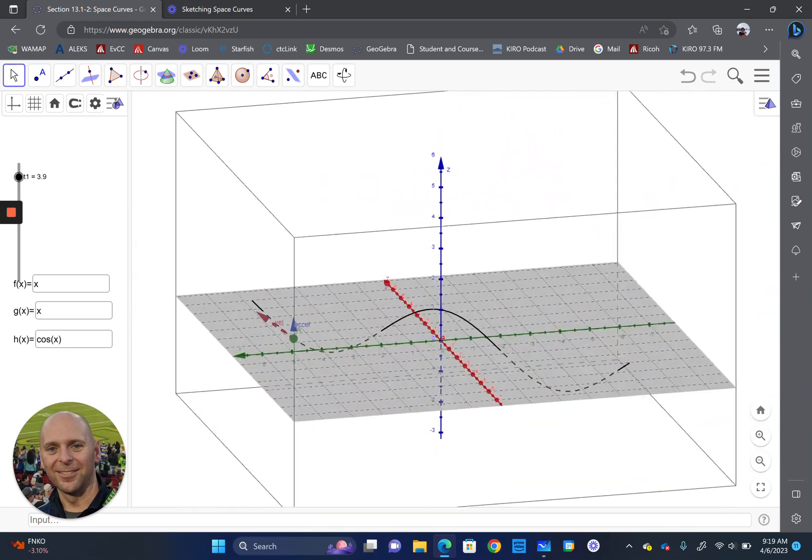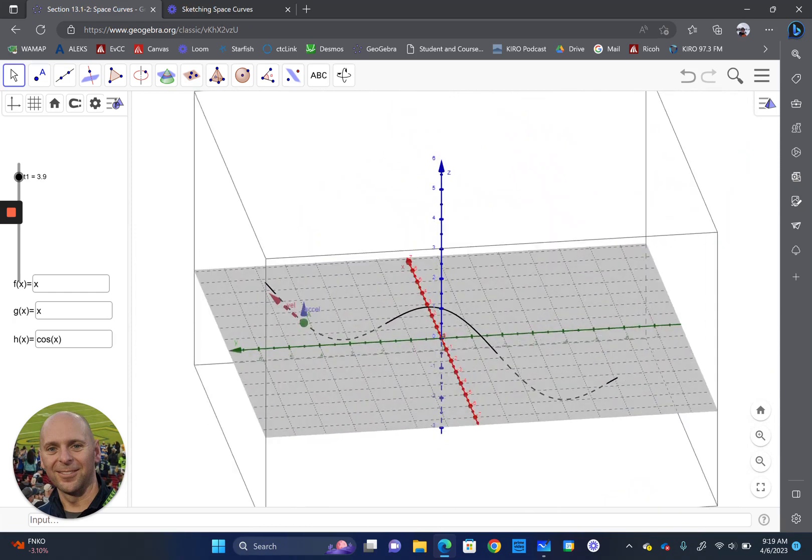So again, a pretty simple one to look at and try and visualize. If these get more complicated than that, then generally, we just want to graph them using some kind of tool online or whatever we have available to us. Generally speaking, these things can get very complicated, and so we wouldn't necessarily want to do that by hand.